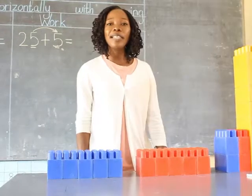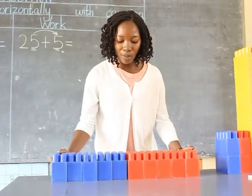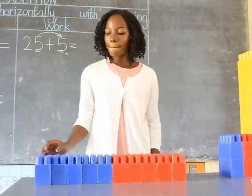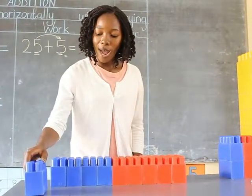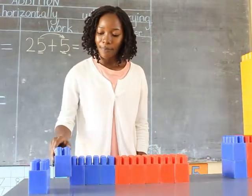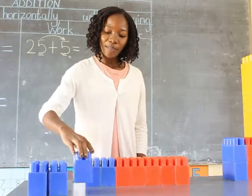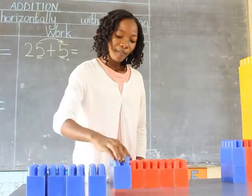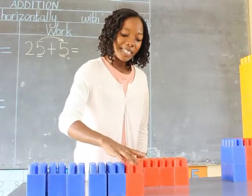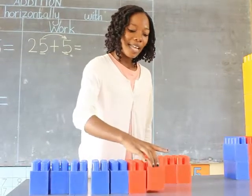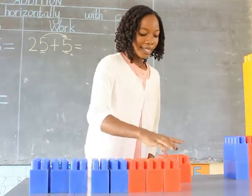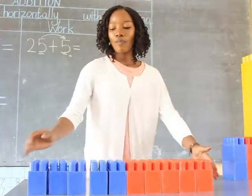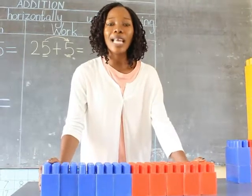Adding means putting things together, so I'm going to put the building blocks together. Let's count together: 1, 2, 3, 4, 5, 6, 7, 8, 9, 10. So 5 plus 5 equals 10.